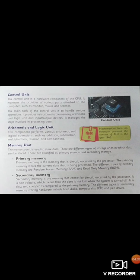The control unit controls the entire process of the computer and the various parts connected to it, like the monitor, mouse, and scanner. We can relate this to a human brain — just as the brain controls all body parts like hands, legs, nose, ears, sending and receiving signals so they perform accordingly, similarly in computers the control unit controls all parts such as the monitor, mouse, scanner, and keyboard.